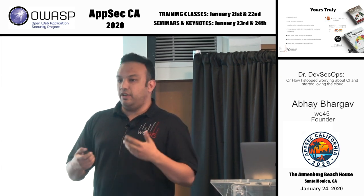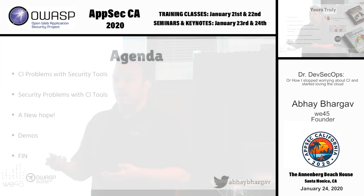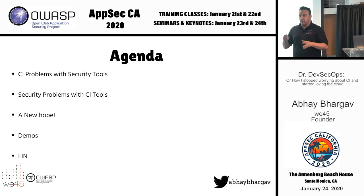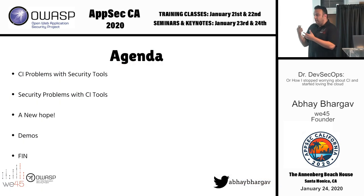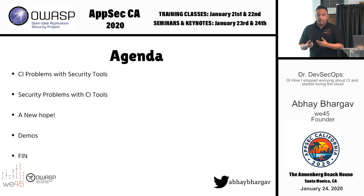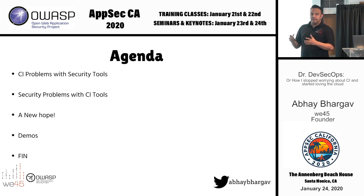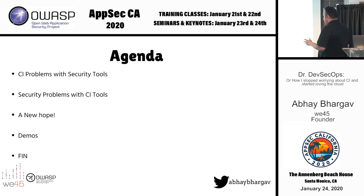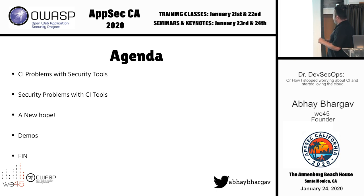This talk evolved from that need: how could we leverage cloud native stuff? How could we leverage what you're already doing with cloud applications and cloud application delivery to make this better — a little bit more cloud native, a little bit more collaborative? So the agenda covers CI problems with security tools, a new hope using cloud-native approaches, and a couple of demos.